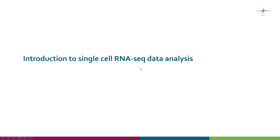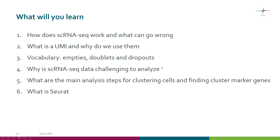This video gives a brief introduction to single cell RNA-seq data analysis. We will first look at how single cell RNA-seq works and what can go wrong in the process. What are unique molecular identifiers and why do we use them? What are empties, doublets and dropouts? Why is this data so challenging to analyze? What are the main analysis steps for clustering cells and finding marker genes for those clusters?